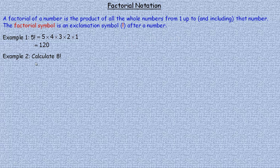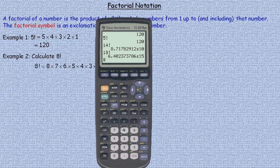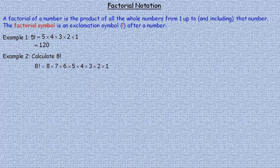The second example says calculate 8 factorial. So 8 factorial would be 8 times 7 times 6 times 5 times 4 times 3 times 2 times 1. We can go back to the calculator to evaluate this. 8 factorial is 40,320. That's equal to 40,320.